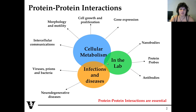At last, also in the lab, if you are an experimental person, for example, you may already have used nanobodies or protein probes or antibodies in order to isolate or recognize a protein in your sample. And all these are also based on protein-protein interaction. So this is really important.